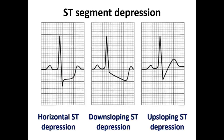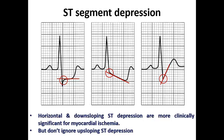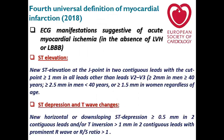Starting with ST-segment depression, there are three morphological variants: horizontal, down-sloping, and up-sloping ST depression, according to the direction of the ST segment from the J point. Horizontal and down-sloping ST depression are more clinically significant for myocardial ischemia than up-sloping. However, please do not ignore up-sloping ST depression — sometimes in a patient with chest pain, it may be the only abnormal finding suggestive of myocardial ischemia.